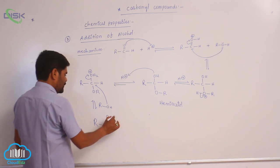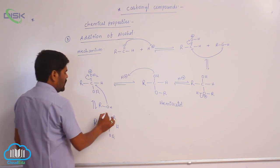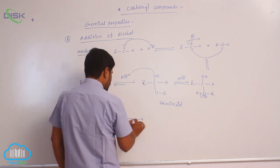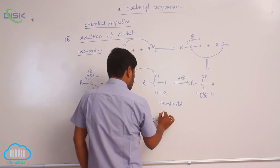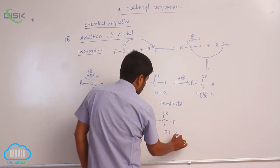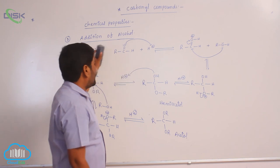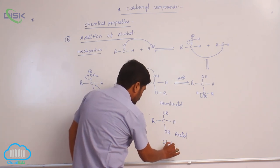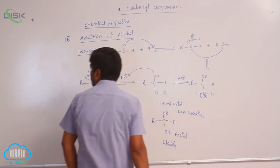The alcohol attacks on the carbon, giving an intermediate with R, H, and OR carrying a positive charge. Loss of H plus occurs again, giving a product with OR and another OR group. This is known as an acetal. So this is the mechanism of the formation of hemiacetal as well as acetal. The hemiacetal is less stable, whereas the acetal is more stable.